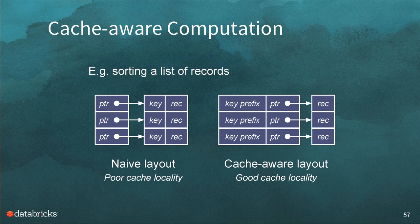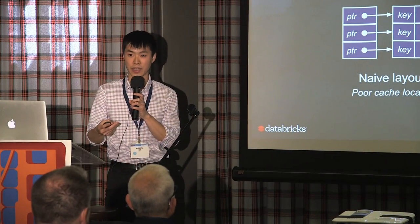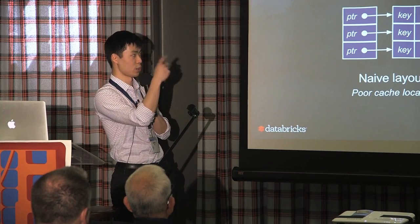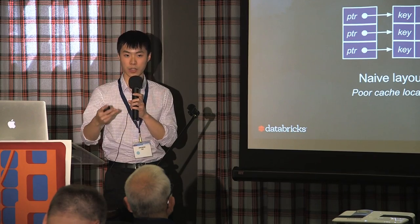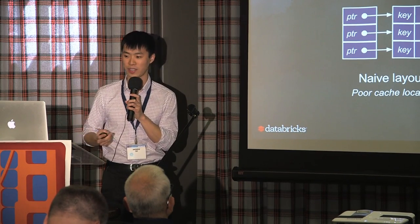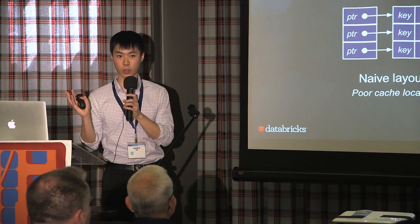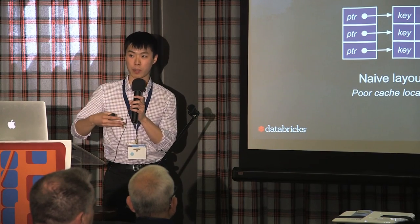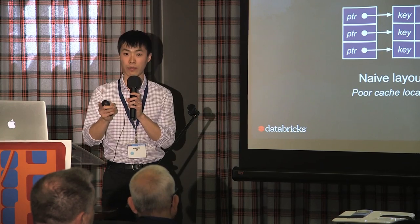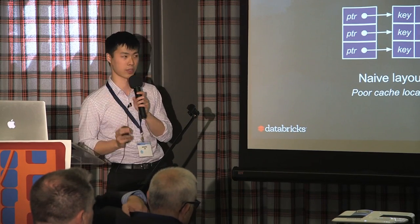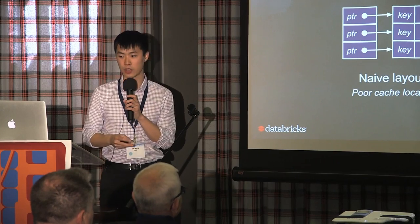The second part of Tungsten is taking advantage of L1/L2/L3 caches. For example, a naive way to sort a list of records is to sort the pointers themselves, but every comparison requires two memory accesses — going to Sacramento twice, which is expensive. A better approach is to store the sort key, or at least part of it, right alongside the pointer — a cache-aware layout. You can then directly compare two key prefixes without dereferencing a pointer, leading to better cache locality.